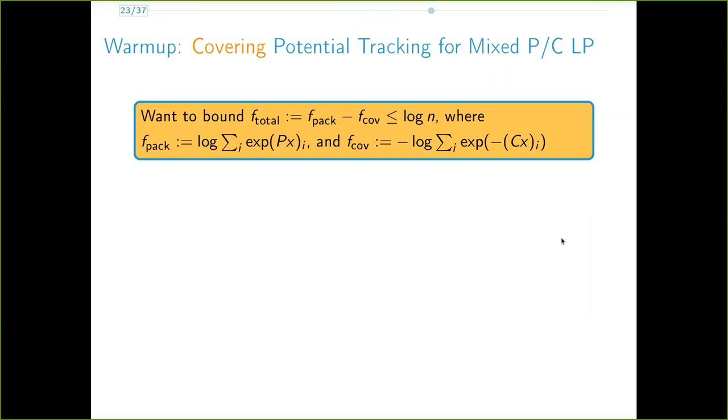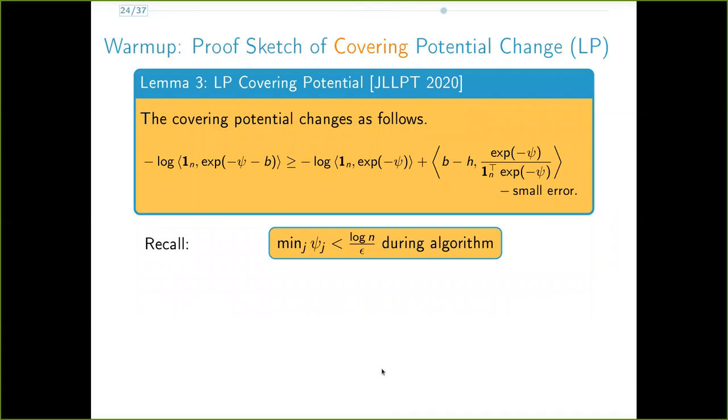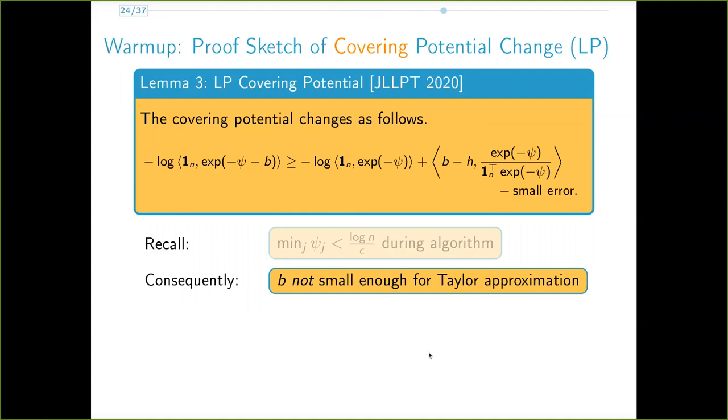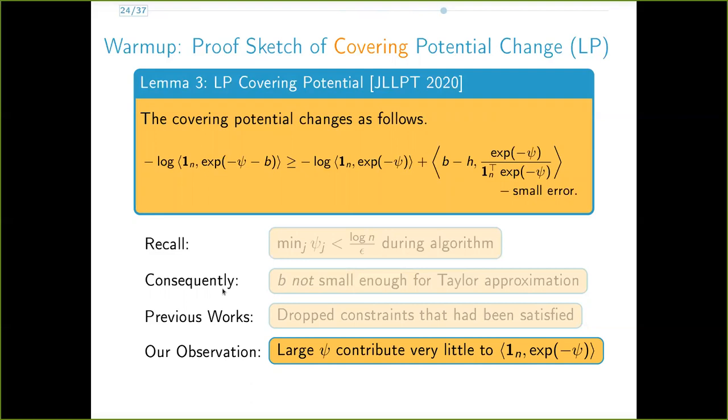We now look at the change in the covering potential per iteration, again in the LP setting. Here, psi is the vector cx and b and h are the first and second order increments in cx. A crucial point to note here is that the proof of the packing potential from the LP case does not immediately apply for this statement. This is because the feasibility of x guarantees that only the minimum entry of cx is small. This means we do not have an entry-wise bound on all the elements of psi and so we can't simply Taylor-approximate the left-hand side of the result that we want. Therefore, to prove this lemma, all previous works dropped the covering constraints that had been satisfied because those are the ones which correspond to large coordinates of cx. But the problem is that dropping constraints doesn't really translate to anything meaningful in the SDP setting, which is what we care about.